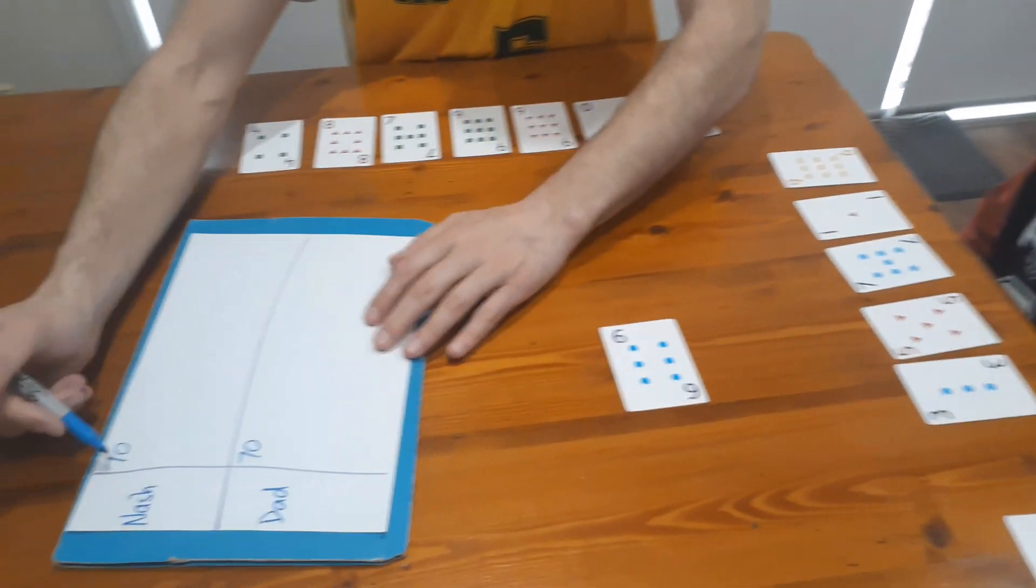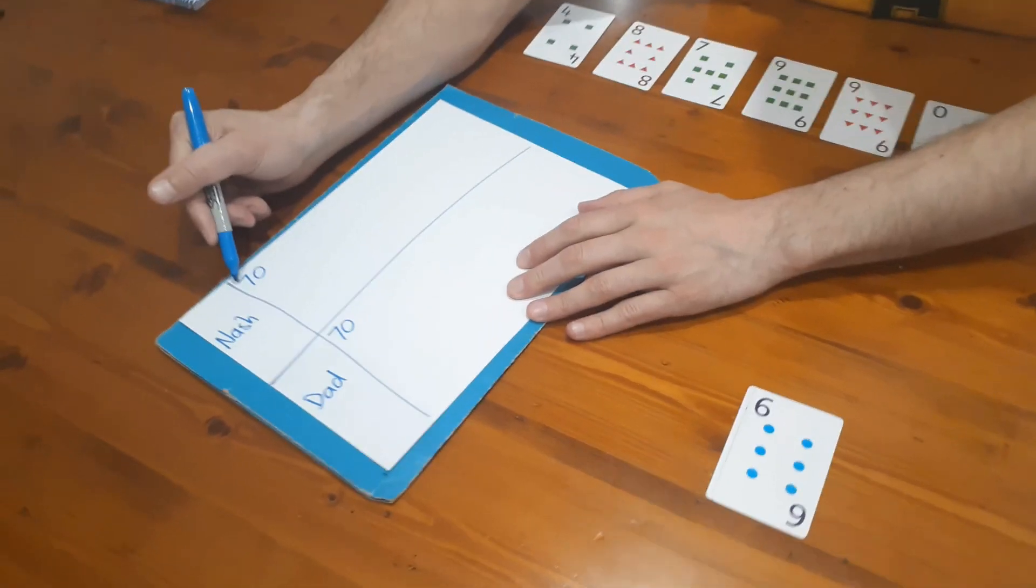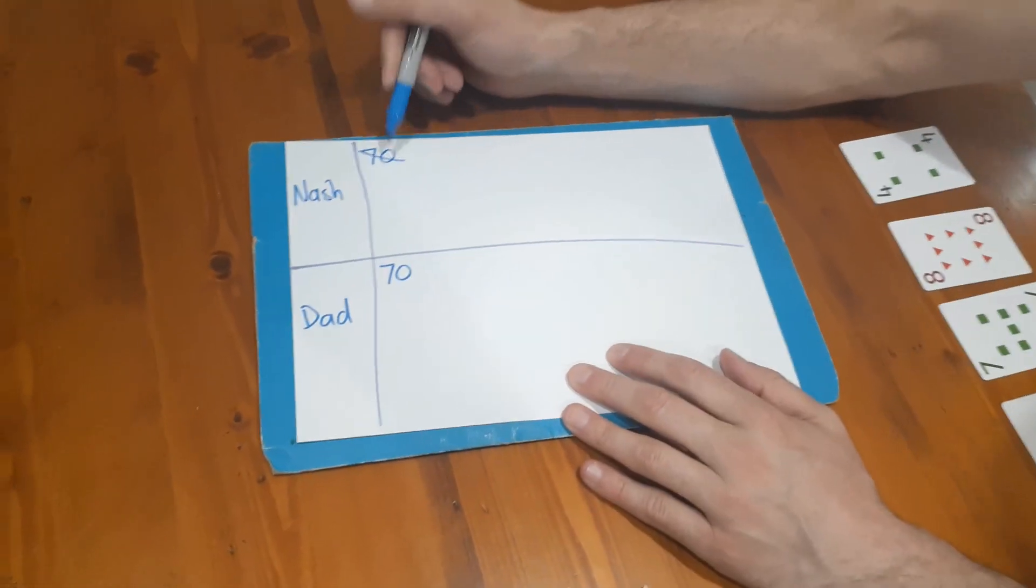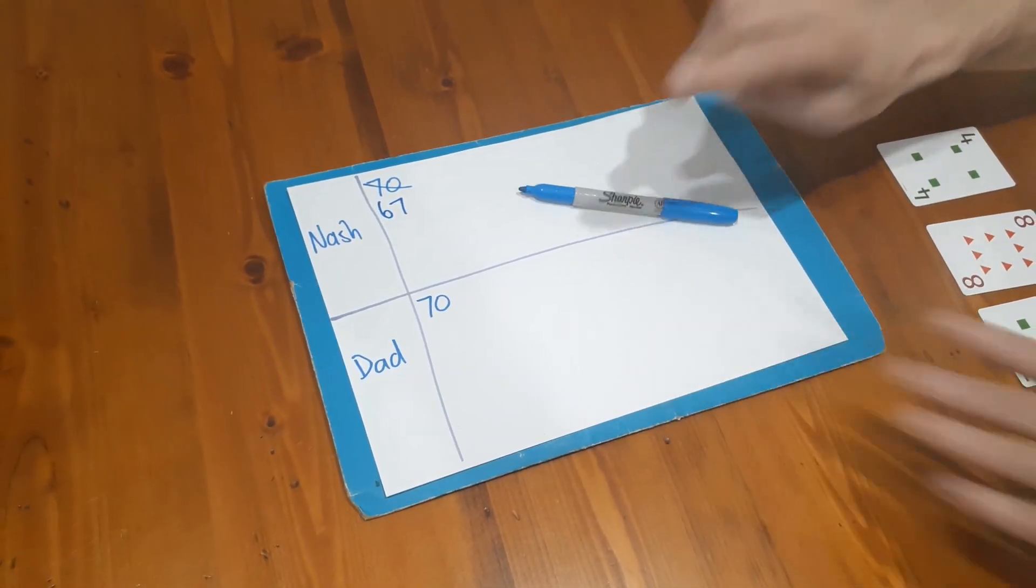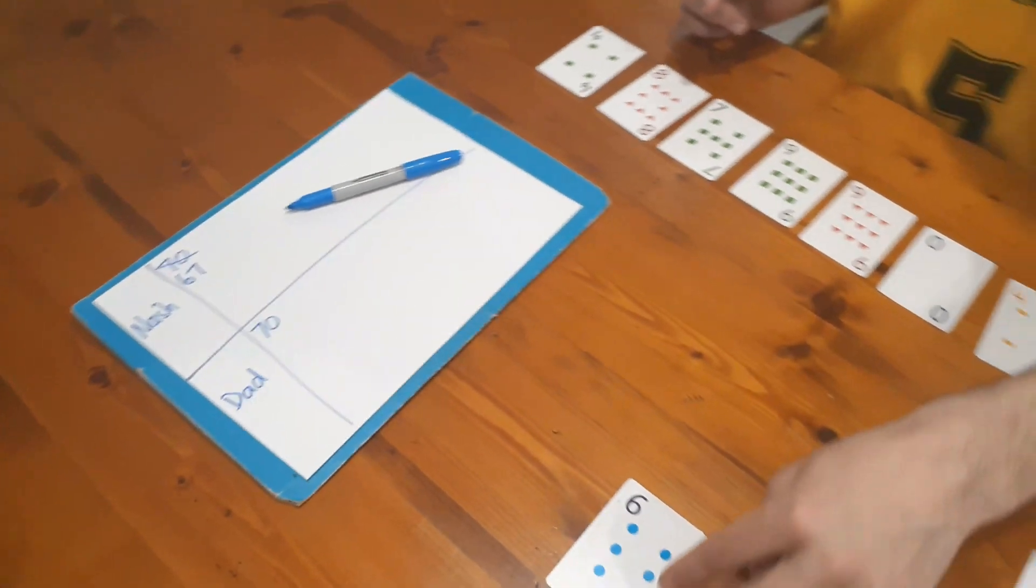What we do is take three from Nash's score. Nash, you were on 70, what will you be on now? 67, right. So Nash is on 67. Now I'm trying to do the same, but I've got a different target number. I've got six, I'm going to put the zero on top. Difference between six and zero is six, and I am now on 64.